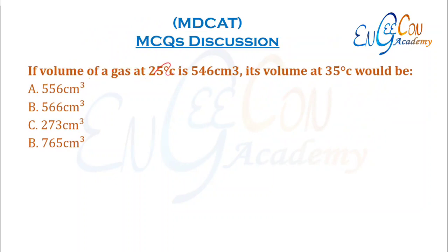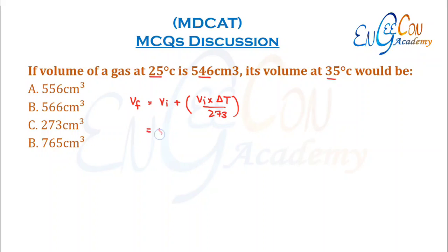If the volume of a gas at 25°C is 546, its volume at 35°C would be: final volume = initial volume + initial volume × (ΔT / 273) = 546 + (546 × 10 / 273) = 546 + 20 = 566 cm³.